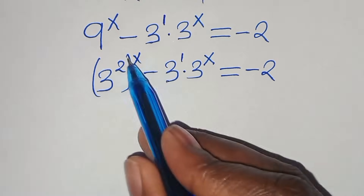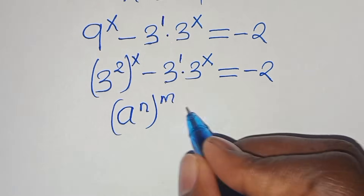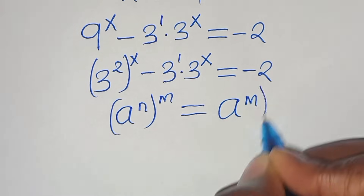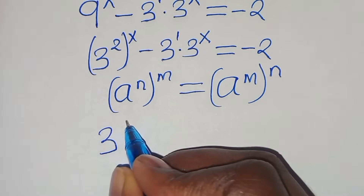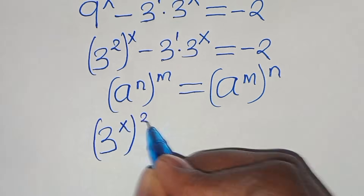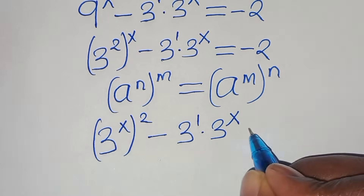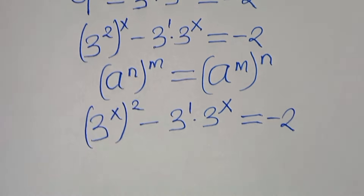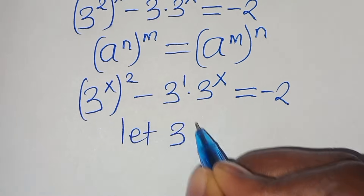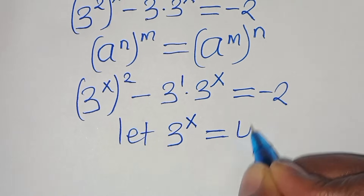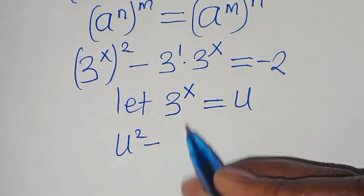Now, 3 to the power of 2 raised to the power of x is in the form of a to the power of n raised to the power of m, which can be expressed as a to the power of m raised to the power of n. Therefore we have 3 to the power of x, raised to the power of 2, minus 3 to the power of 1 times 3 to the power of x, equals minus 2. We let 3 to the power of x equal u, so now we have u squared minus 3u.